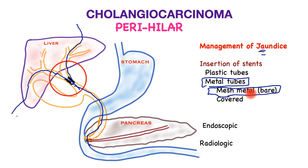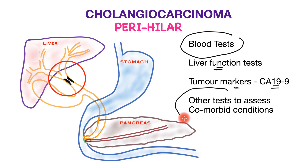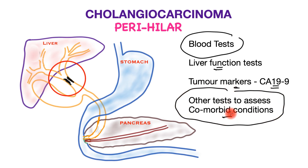Infections are common and must be prevented during the course of treatment. Blood tests typically include liver function tests to assess jaundice and liver function, as well as the tumor marker CA 19-9 as a prognostic indicator. Other tests may be performed to assess the patient's physiology and comorbid conditions as required.